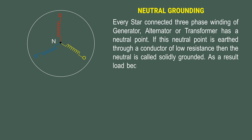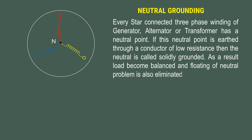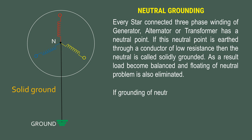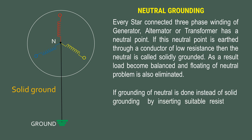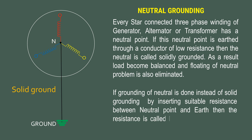As a result, the load becomes balanced and the floating neutral problem is also eliminated. If grounding of the neutral is done instead of solid grounding by inserting suitable resistance between the neutral point and earth, then that resistance is called NGR — Neutral Grounding Resistor.